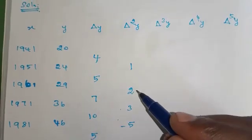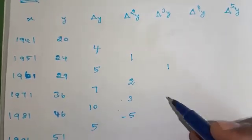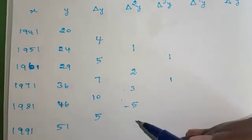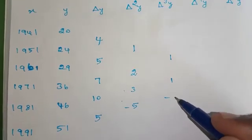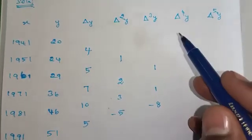Next, Δ³y. Δ³y: 2 minus 1 = 1; 3 minus 2 = 1; minus 5 minus 3 = minus 8.